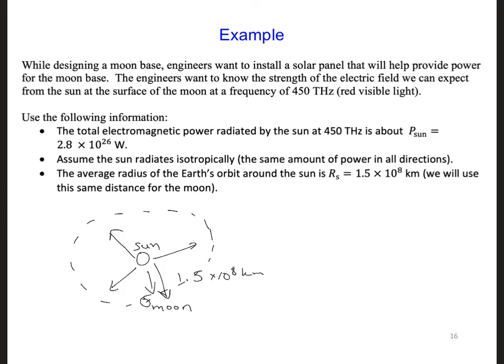The power density at the moon's surface is then s average equals p sun over 4 pi r squared. If we plug in our values, we get s average is 990 watts per meter squared.